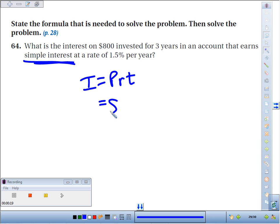So in this case, we invest $800 times the rate, 1.5% as a decimal is 0.015, times T is the number of years. In this case, it's 3, and if we crank that out, let's see what we get here.